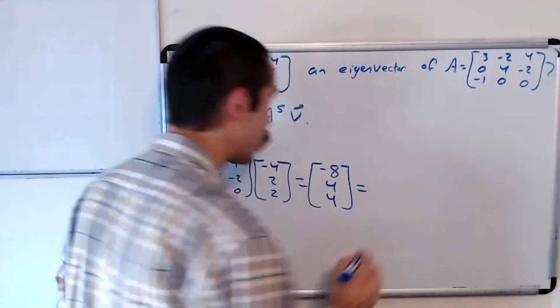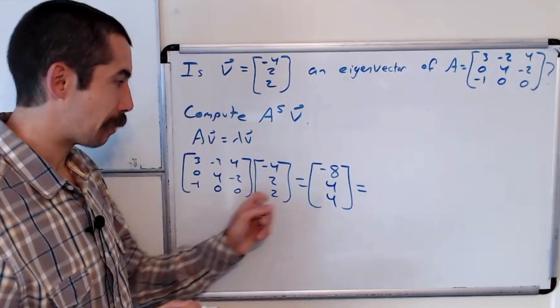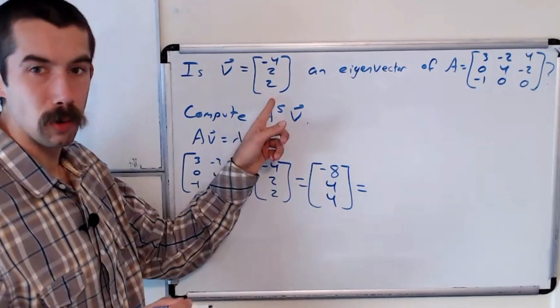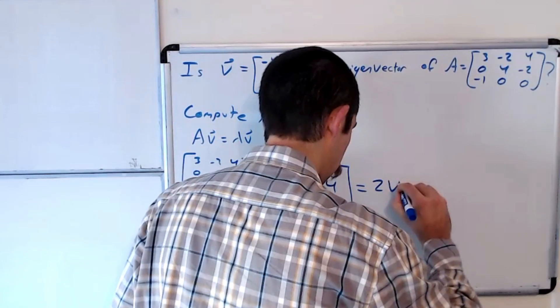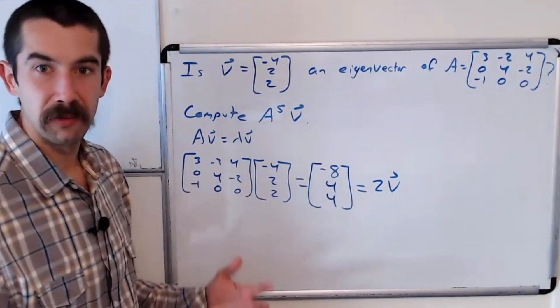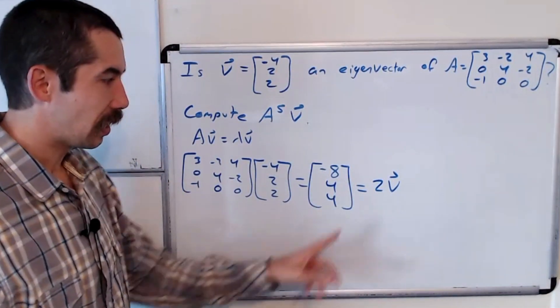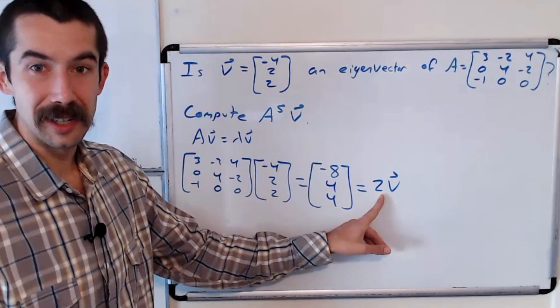And you can see that this vector here, A times V, is exactly 2 times V. So yes, V is an eigenvector of A, and its eigenvalue is 2.